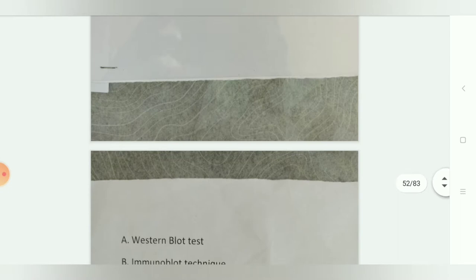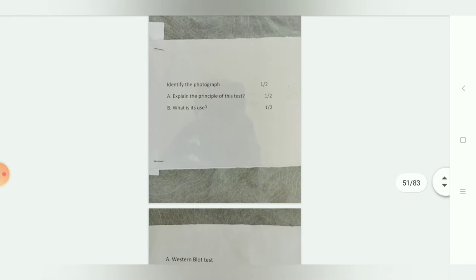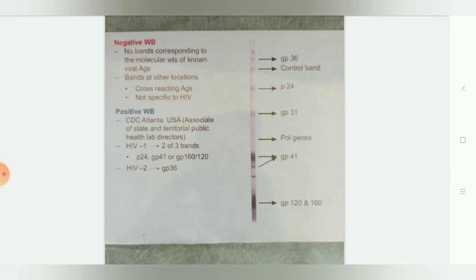The western blot is used as a supplementary test for the laboratory diagnosis of HIV. For a negative western blot result, there are no bands corresponding to the molecular weights of HIV-specific proteins — only bands at other locations due to cross-reacting antigens that are non-specific to HIV.